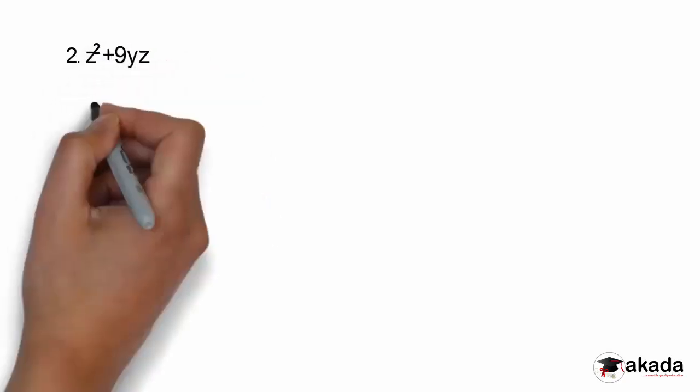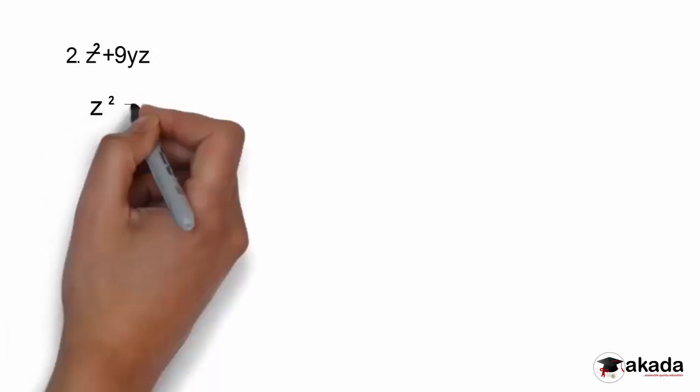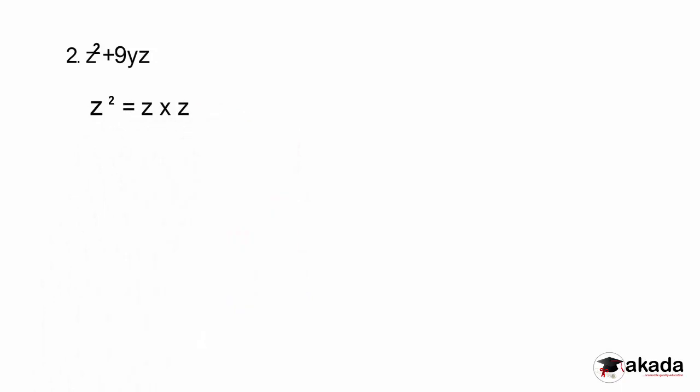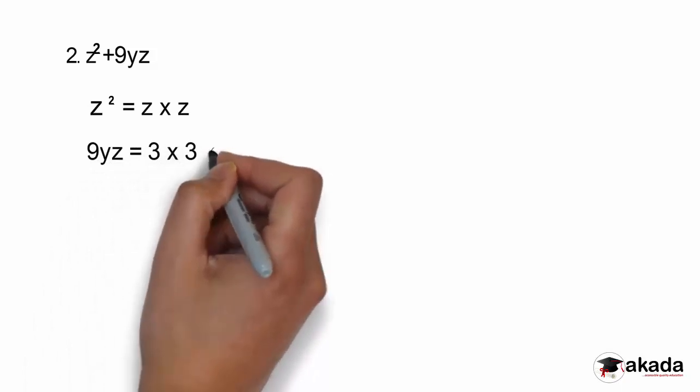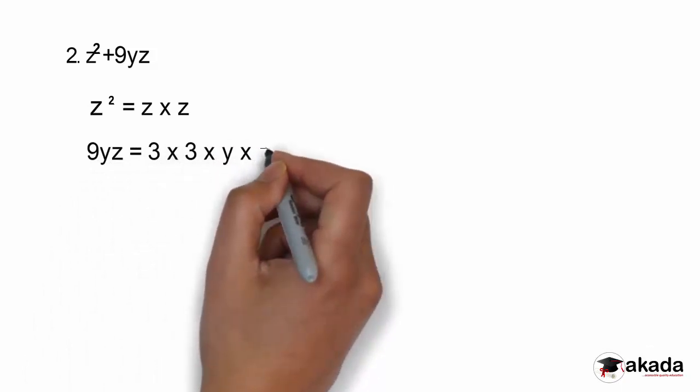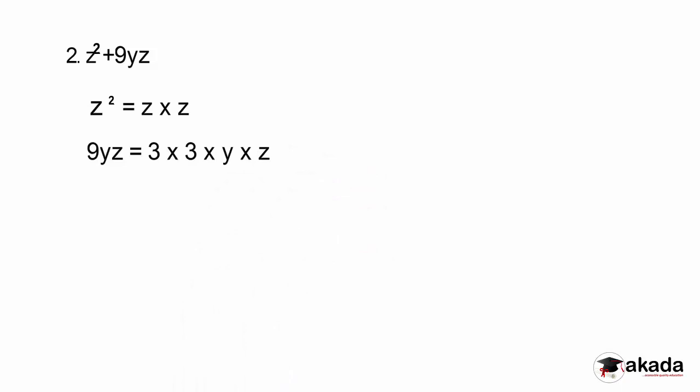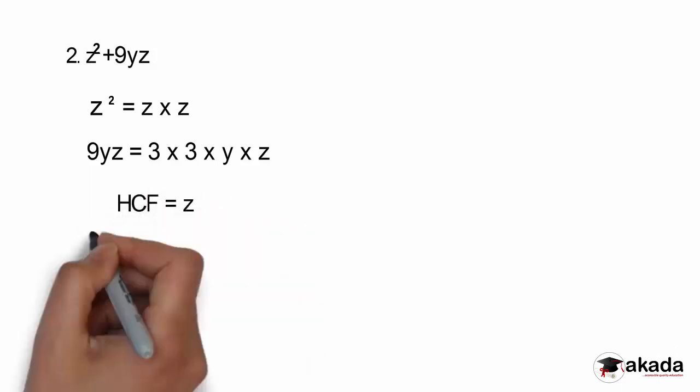Example 2: z squared plus 9yz. What are the factors of z squared? I have z multiplied by z, which gives z squared. For 9yz, I have 3 multiplied by 3 multiplied by y multiplied by z, which gives 9yz. What is the HCF here? What is common to both? You can see that z is common to both. My common factor, the HCF, is z.